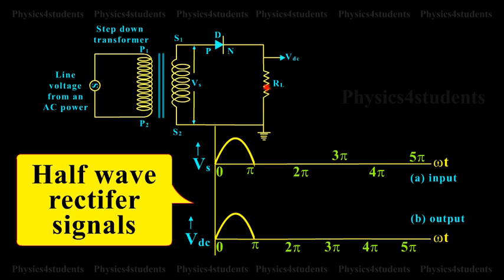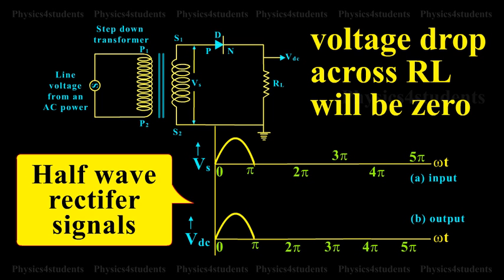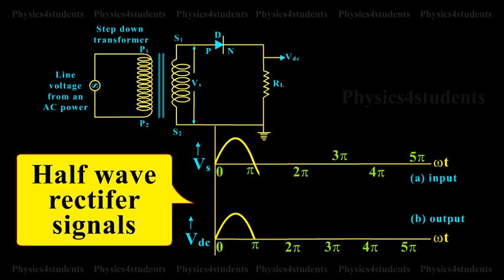During the negative half cycle of the input AC voltage VS, S1 will be negative and the diode D is reverse biased. Hence, the diode does not conduct. No current flows through the circuit and the voltage drop across RL will be zero. Hence, no output voltage is obtained.